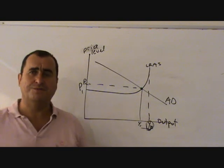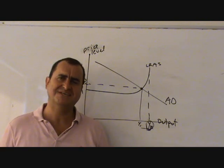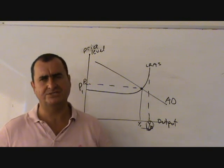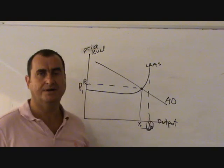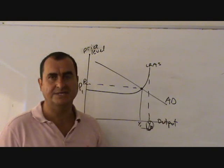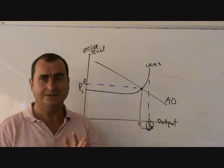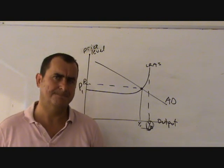Now one of the policies that governments have at their disposal is fiscal policy. Fiscal policy is when a government changes its level of spending, G. G is a component of aggregate demand. Remember the components of AD are C, consumption, I, investment, G, government spending and the difference between export and import spending X minus M.